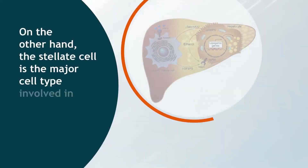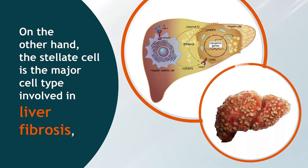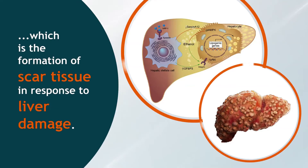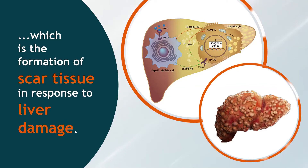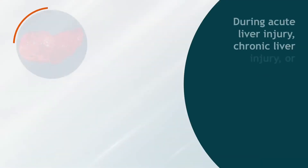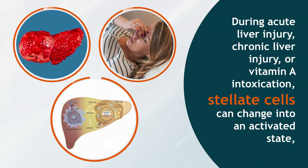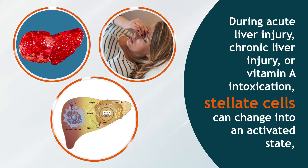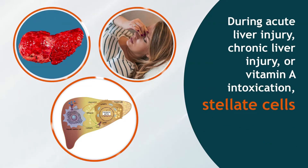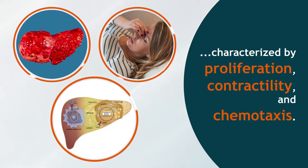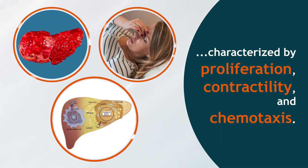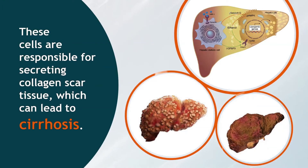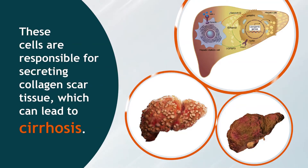The stellate cell is the major cell type involved in liver fibrosis, which is the formation of scar tissue in response to liver damage. During acute liver injury, chronic liver injury, or vitamin A intoxication, stellate cells can change into an activated state, characterized by proliferation, contractility, and chemotaxis. These cells are responsible for secreting collagen scar tissue, which can lead to cirrhosis.